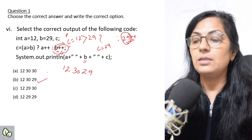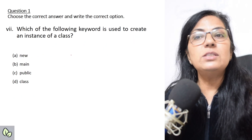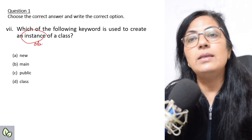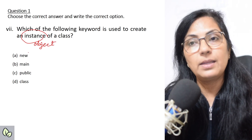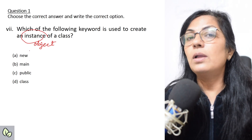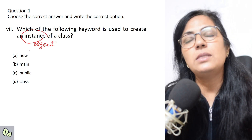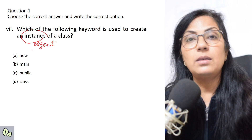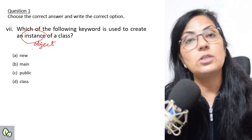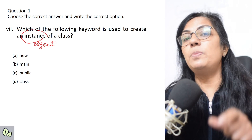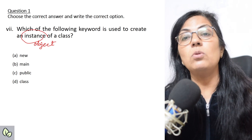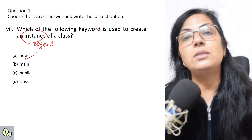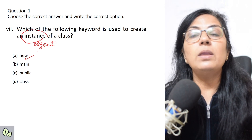Next question: which keyword is used to create an instance of a class? An instance is also known as an object. You all know how to create the Scanner object: Scanner sc = new Scanner(...). Whenever you create any object in class programs or user-defined function programs, always the new keyword is used to create the object of a class and also to allocate memory space.